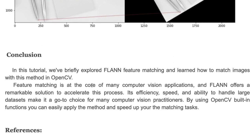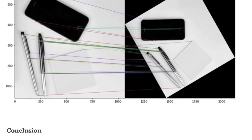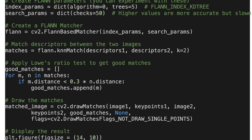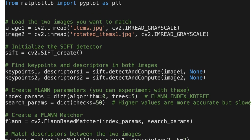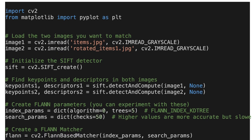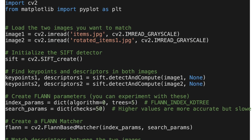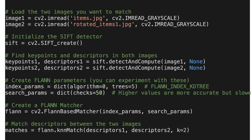That's it for this tutorial. We briefly learned FLANN feature matching and how to match images with this method in OpenCV. By using OpenCV's built-in functions, you can easily apply the method and speed up your matching tasks. I'll put the link for this tutorial and source code right below this video. Please visit my website, subscribe to my channel, hit the like button — thank you for watching and see you next time.